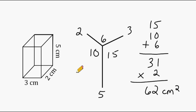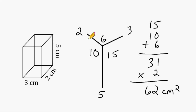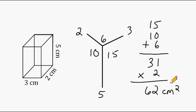So when finding the surface area of any rectangular prism, start by drawing a letter Y and then write the length, the width, and the height at the end of each one of the lines that form your letter Y. Then multiply two numbers at a time and write that product where the two lines converge. Take the resulting three areas, add them together, and take that result and double it. And that will give you the surface area of that rectangular prism.